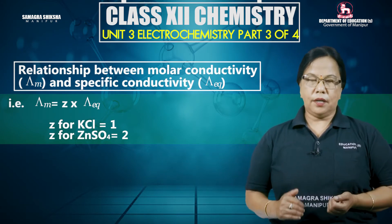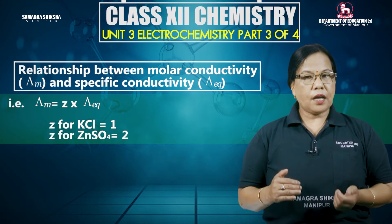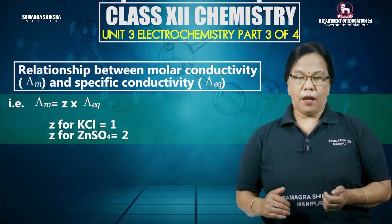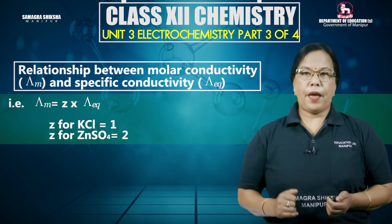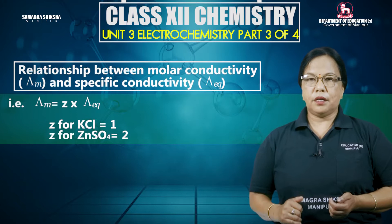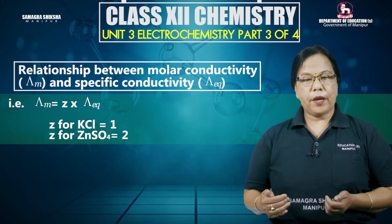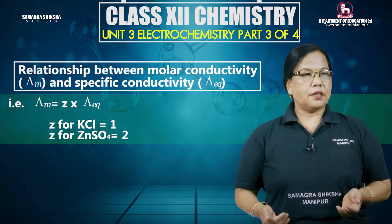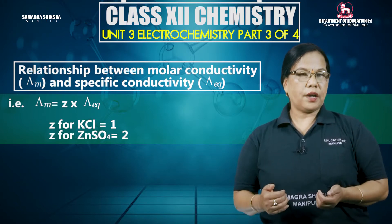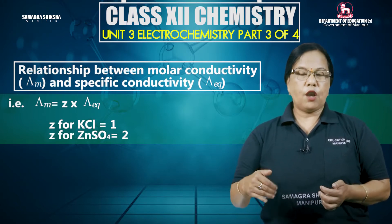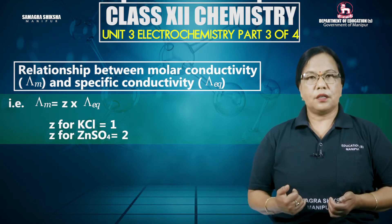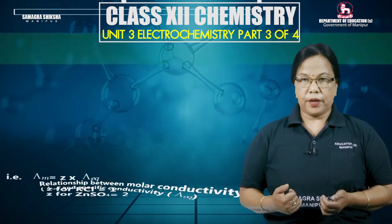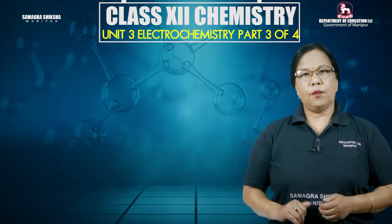For potassium chloride, z equals 1. For zinc sulfate, z equals 2. For aluminum sulfate, z equals 3.